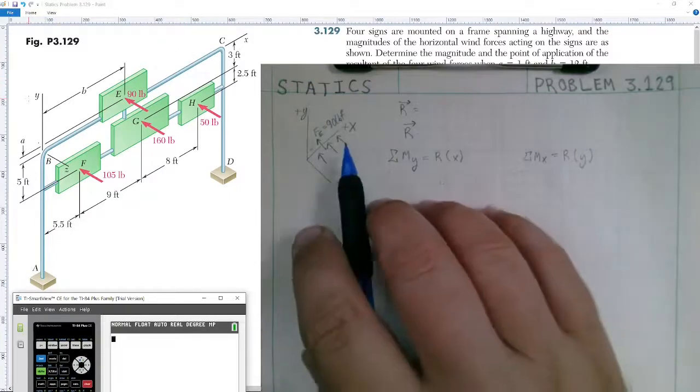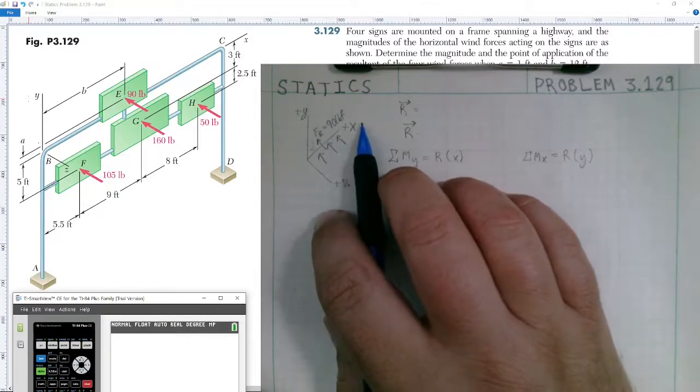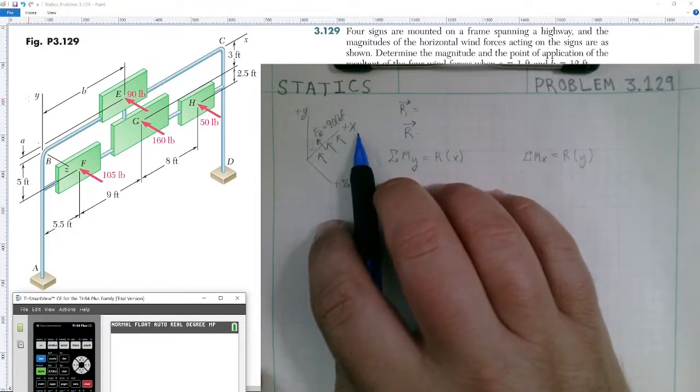So I've drawn a little diagram to make note of that. Remember, positive X is pointing into the page. All right, so let's go ahead and solve for the magnitude of the resultant.